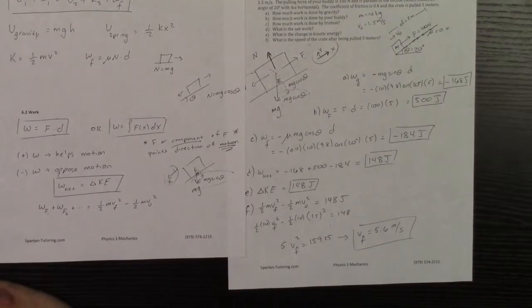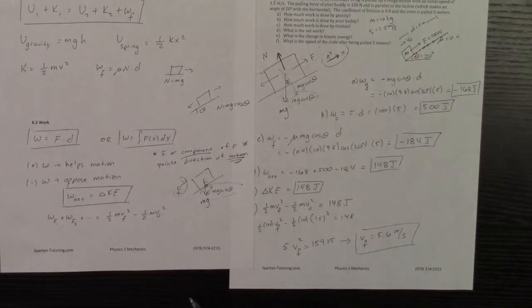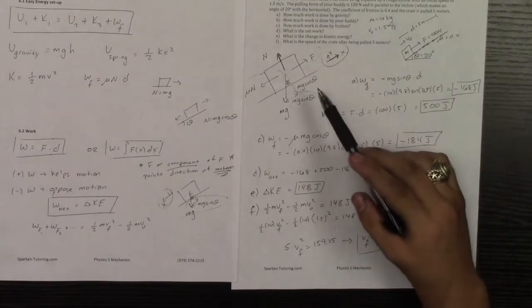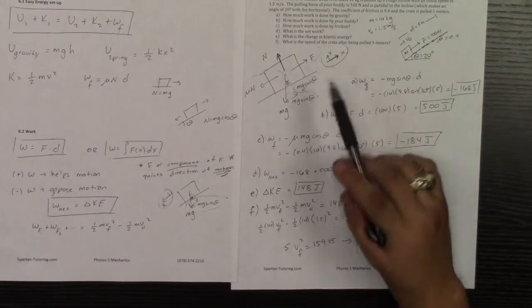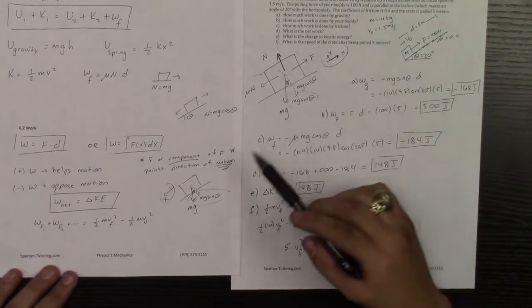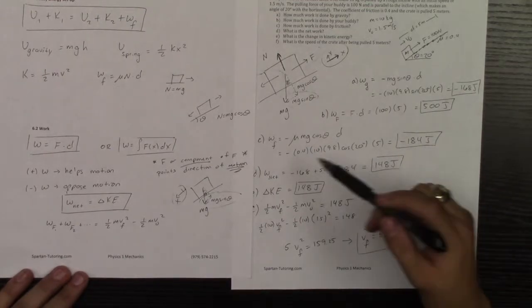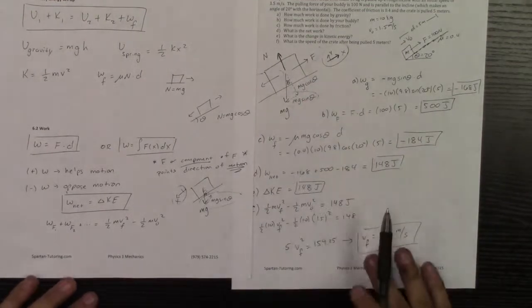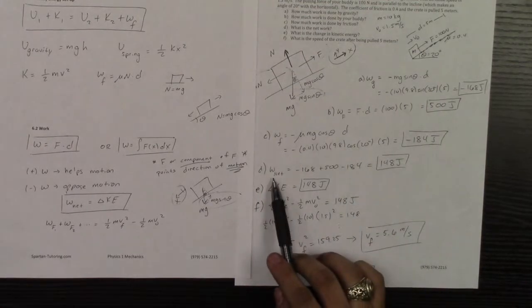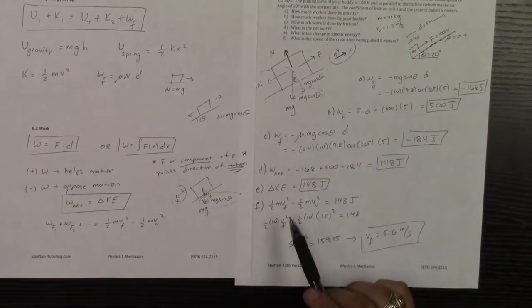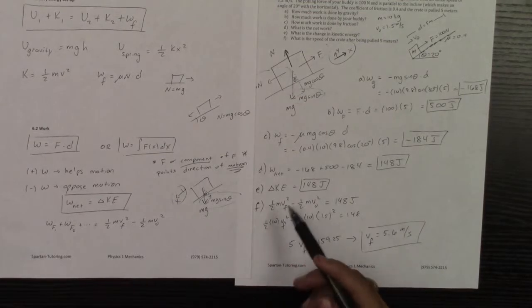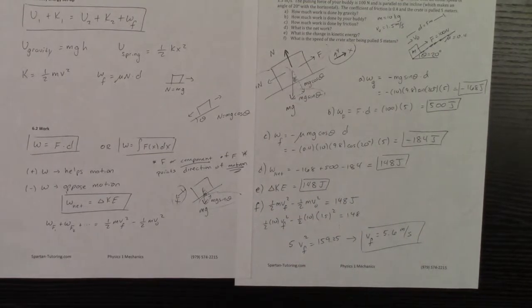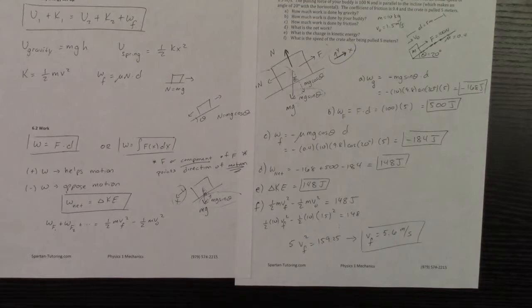So don't overthink work and energy. Work is going to be force times distance, but it's got to be the component of the force, like this F, like the mg sine theta, like the mu times n, that points in the same direction as motion. You do positive work if it helps the motion, and you do negative work if it opposes the motion, just like that friction, just like gravity in this situation. If they ever ask what's the net work done in a system, you add up all the work done by all the forces, and that is equal to your change in kinetic energy. And I can utilize that to help find either my final or initial velocity. So don't overthink it. Hopefully this has helped with your conservation of energy and work, and I will see you in the next video.